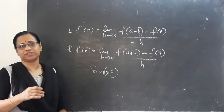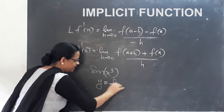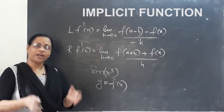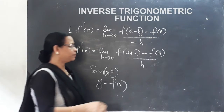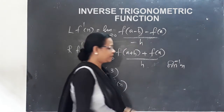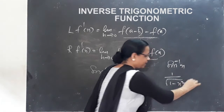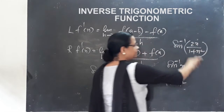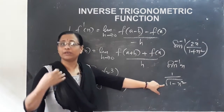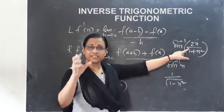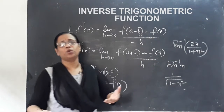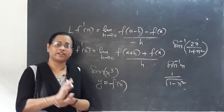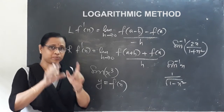The next method is the implicit function, where the function is given directly as y equal to f of x. After that, the inverse trigonometric function method involves differentiating expressions like sin inverse x, which gives 1 divided by the square root of 1 minus x squared.